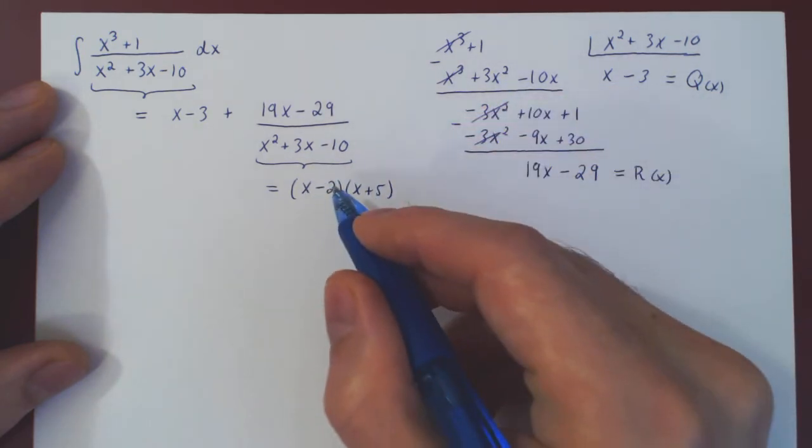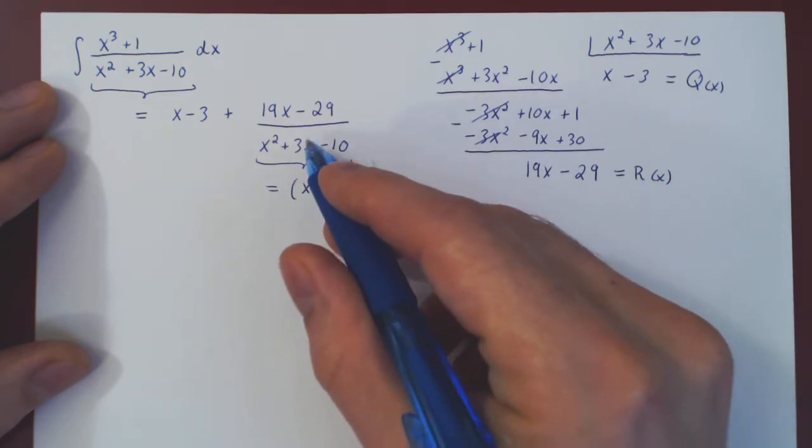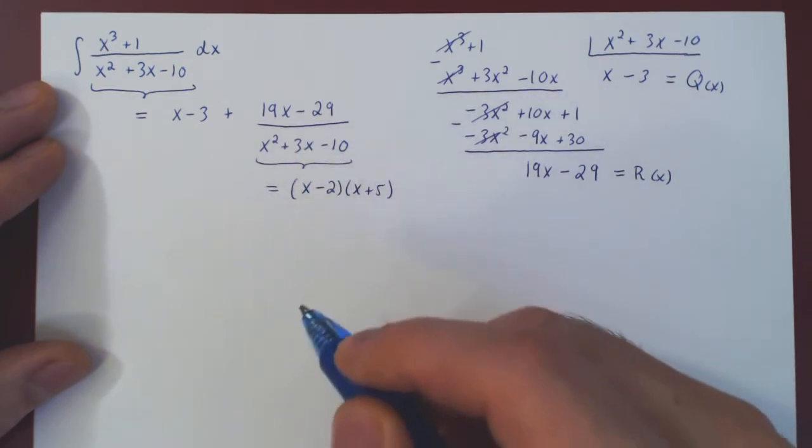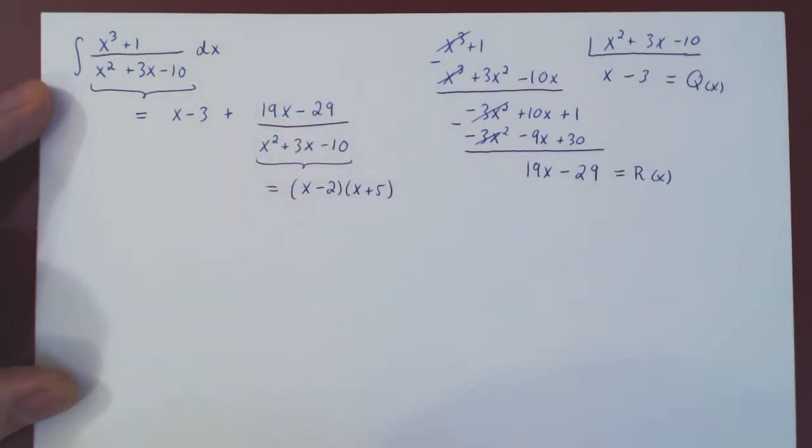As we're looking for two real numbers whose product was negative 10, check, and whose sum was positive 3, check. So now let's break this down into a sum of partial fractions.